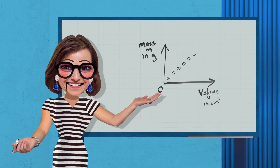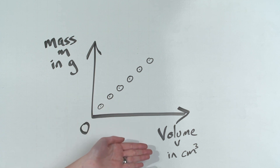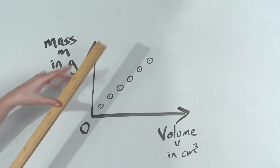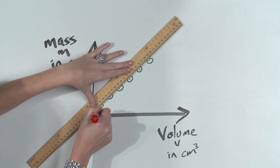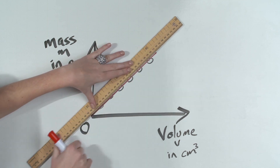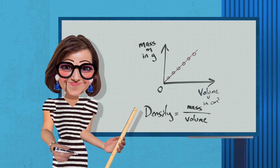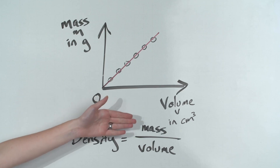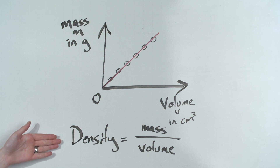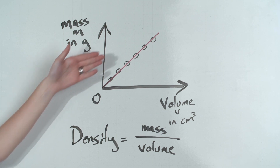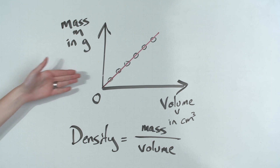We calculate and record the volume in cubic centimeters using volume equals length times breadth times height. Finally, we plot a graph of mass on the y-axis against volume on the x-axis and draw a line of best fit. A straight line through the origin means that the mass of the material is directly proportional to its volume. The mass divided by the volume of an object is called its density, and the gradient of the graph is the density of the material.